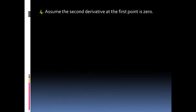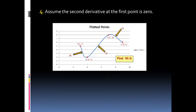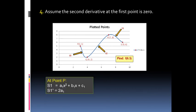For the fourth condition, we assume the second derivative at the first point is zero. Taking the second derivative of s1 gives 2a1, and setting it equal to zero gives a1 = 0. This is another equation needed among the 3n equations.